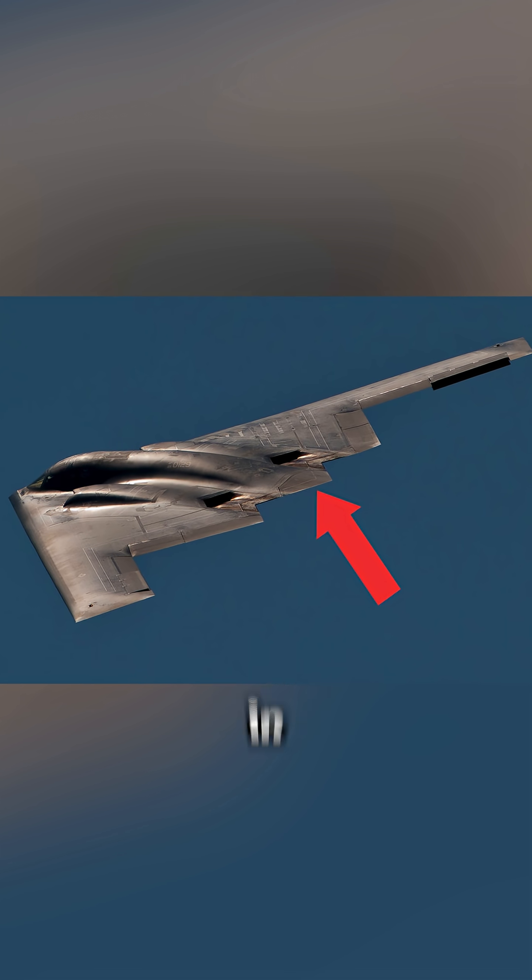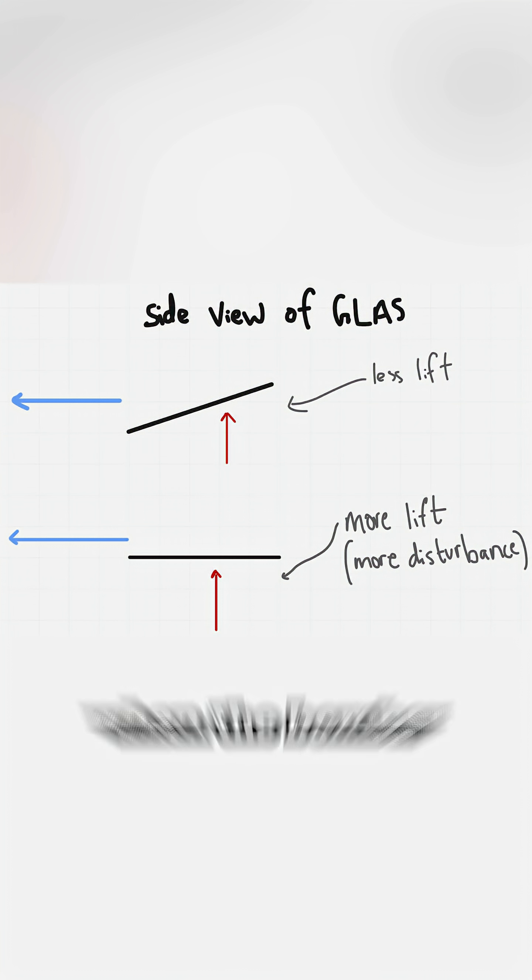Think of the GLAS as a built-in shock absorber for sudden gusts. When the bomber hits a bump of rising air, the GLAS tilts to smooth out the extra lift.